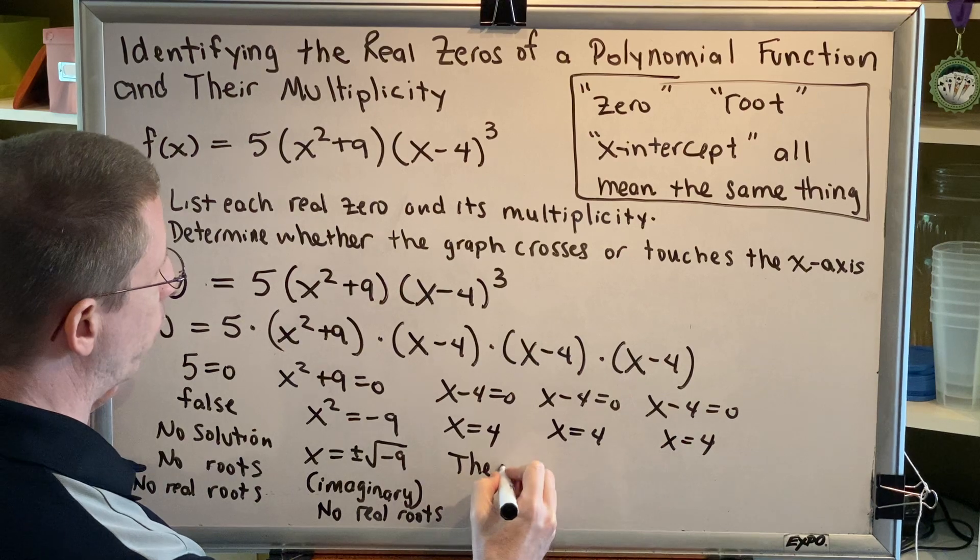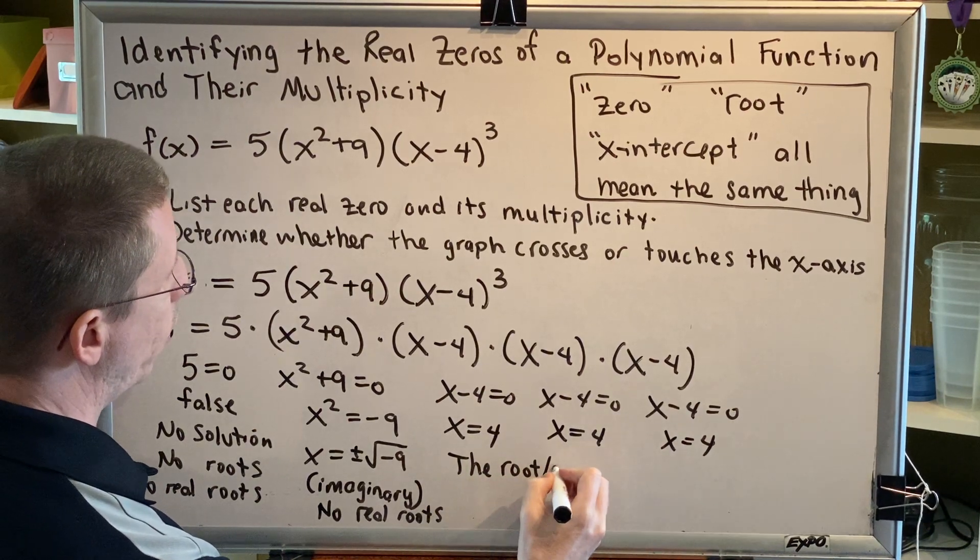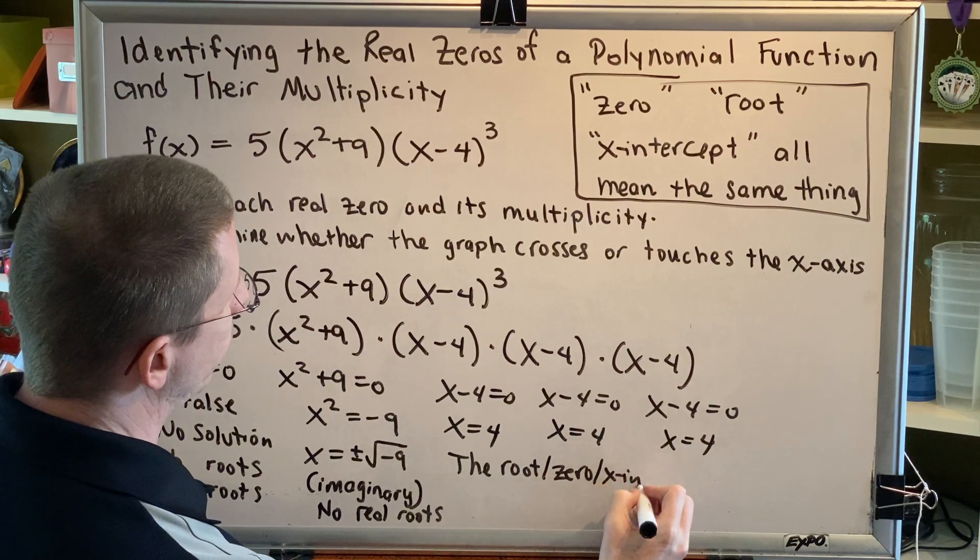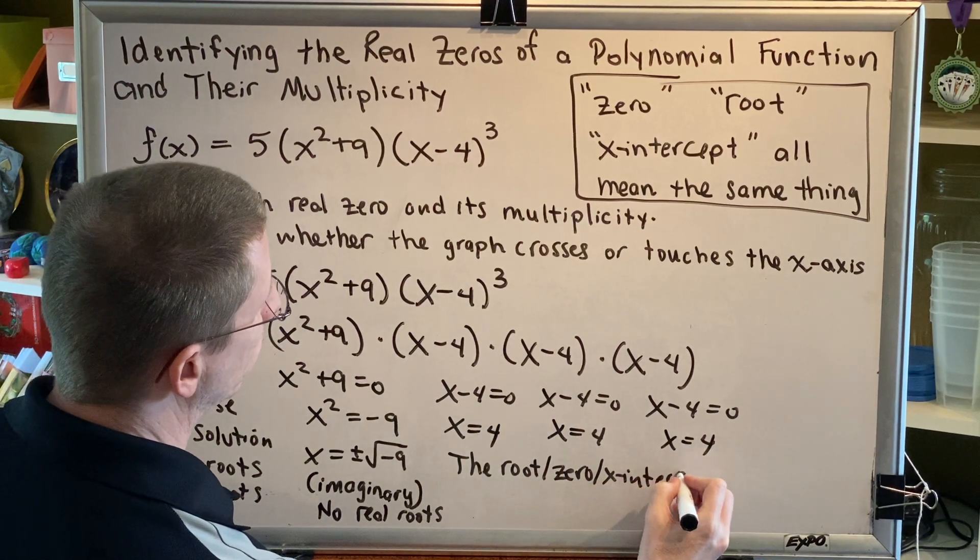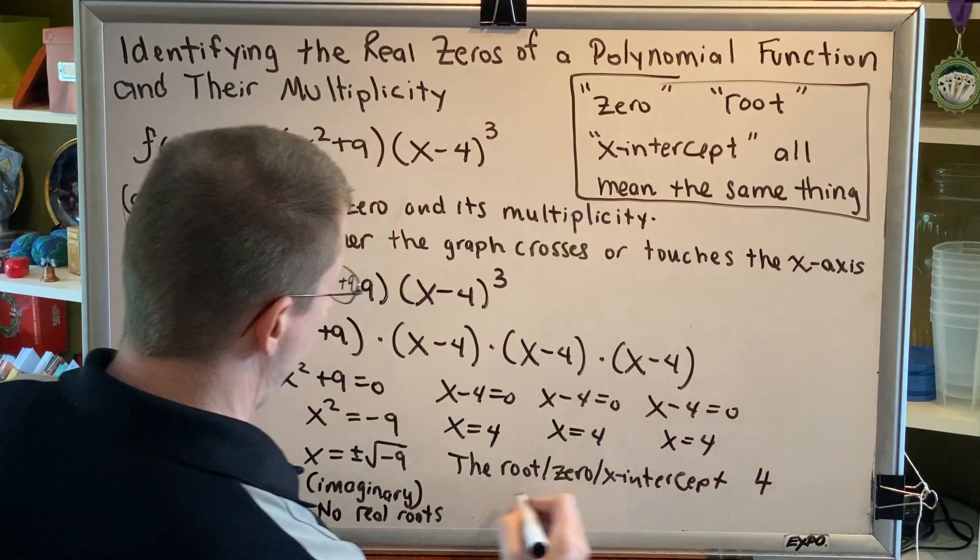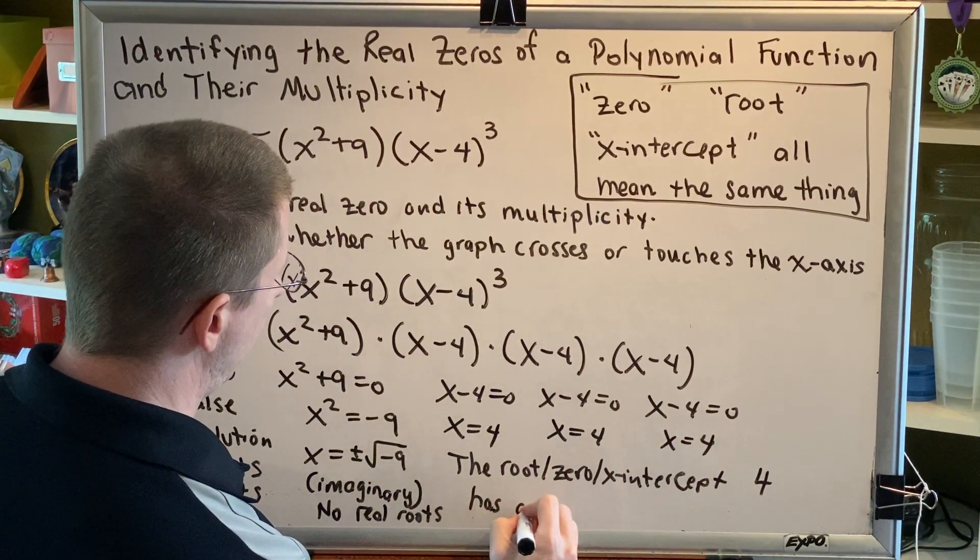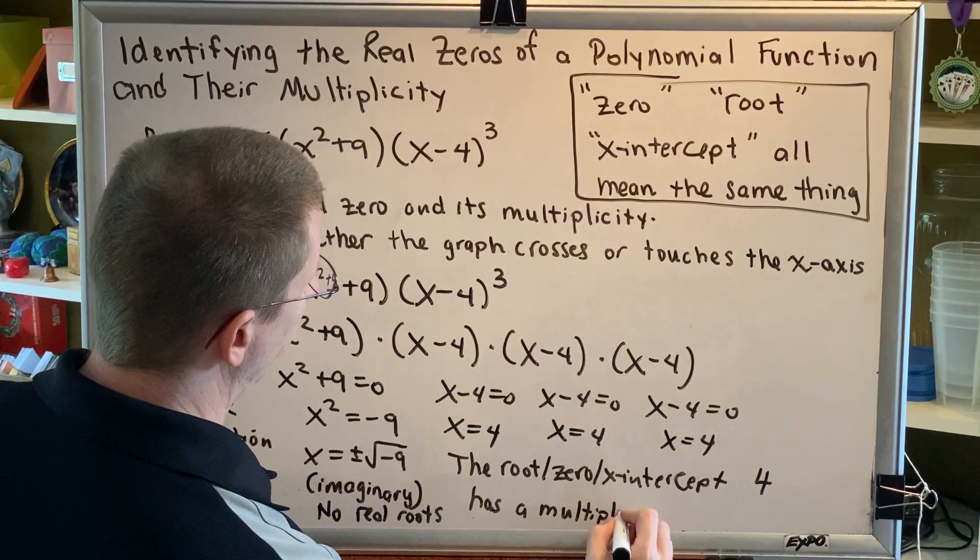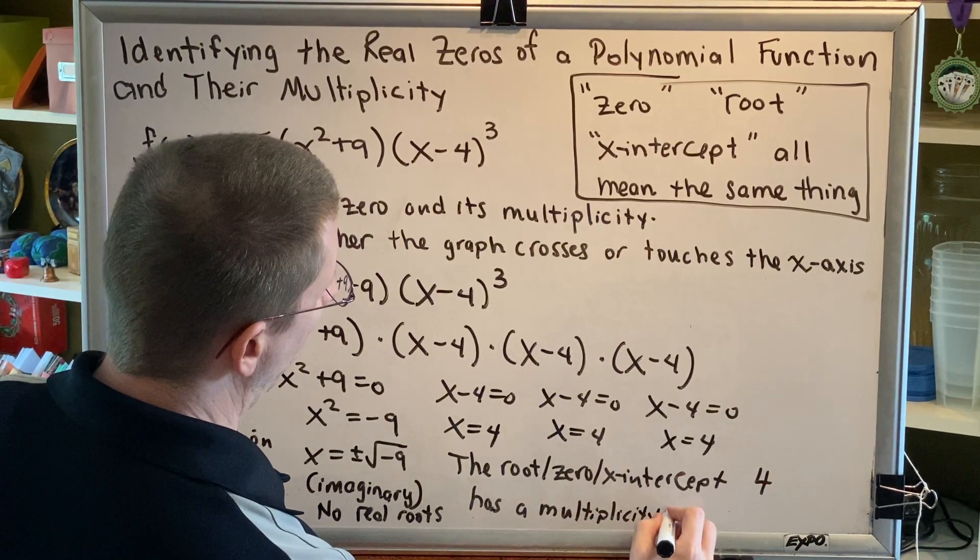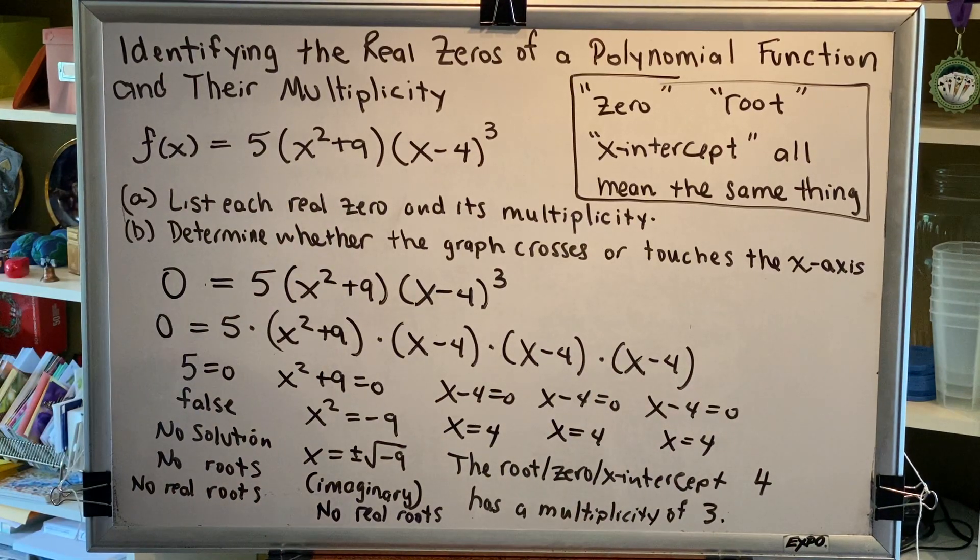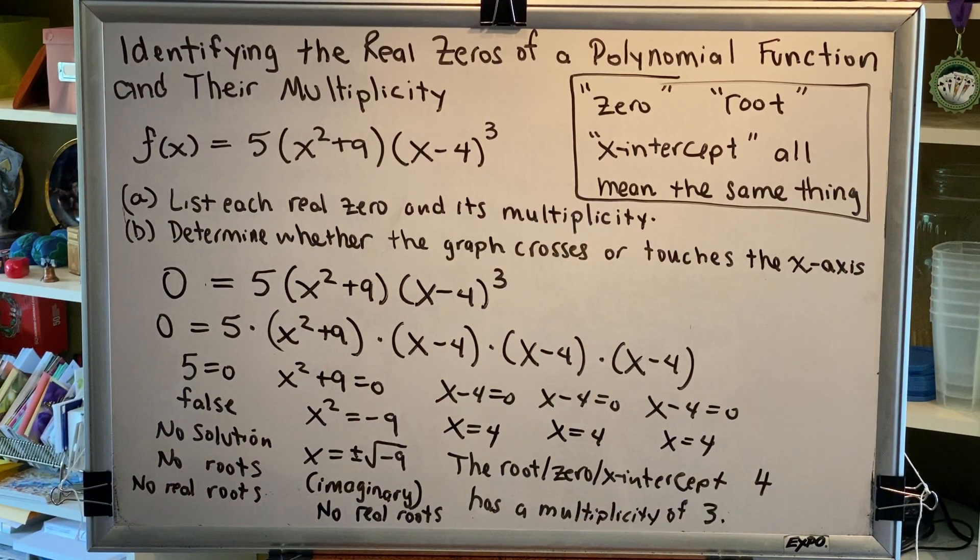So we can write the root, also known as a zero, also known as an x-intercept, 4, has a multiplicity of 3. That's the answer. Part A, list each real zero and its multiplicity.